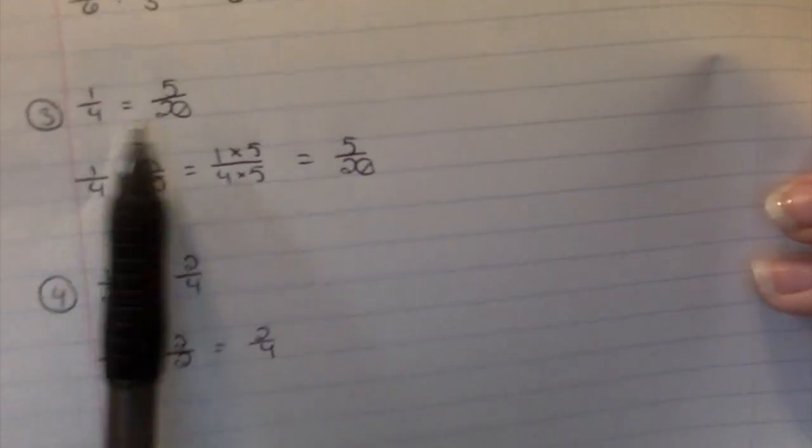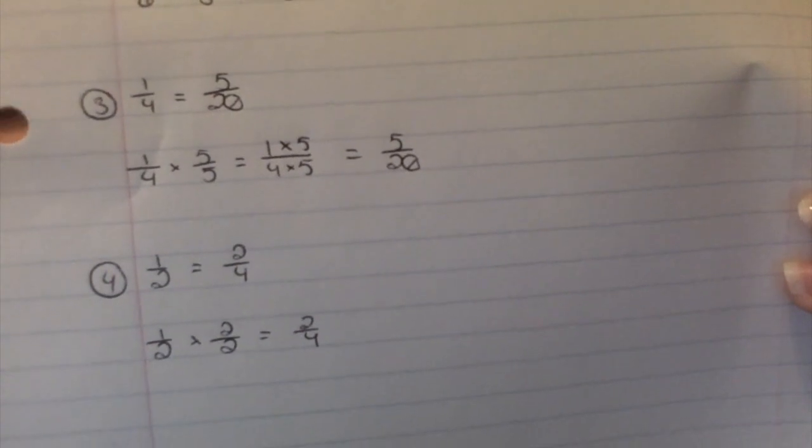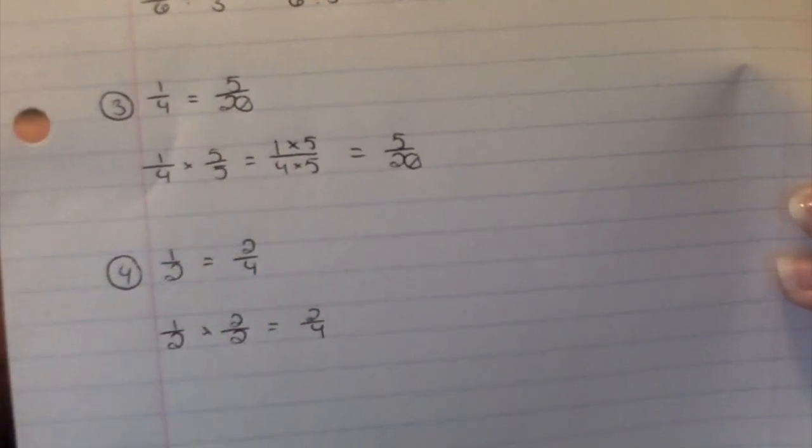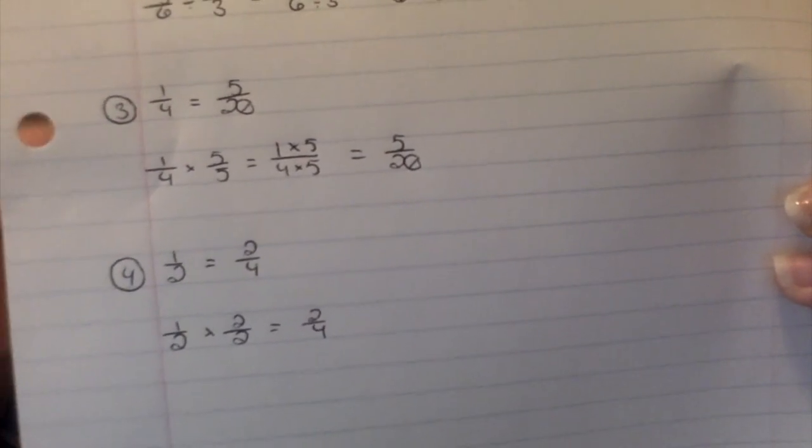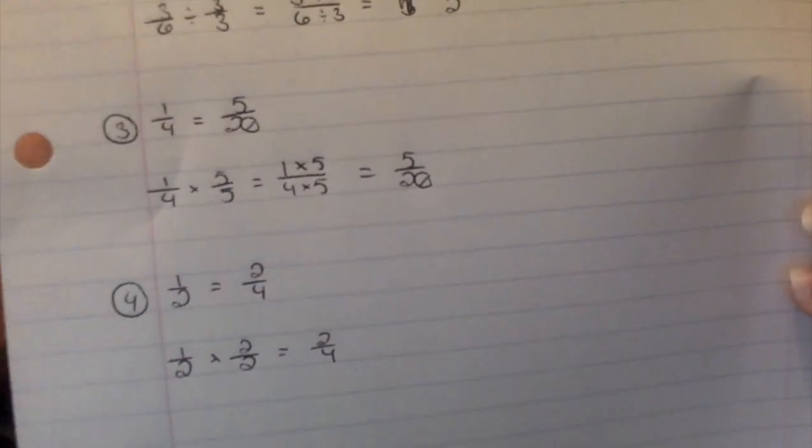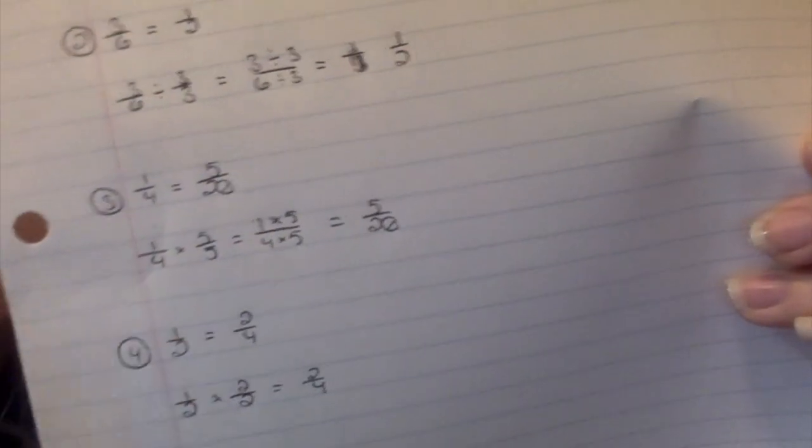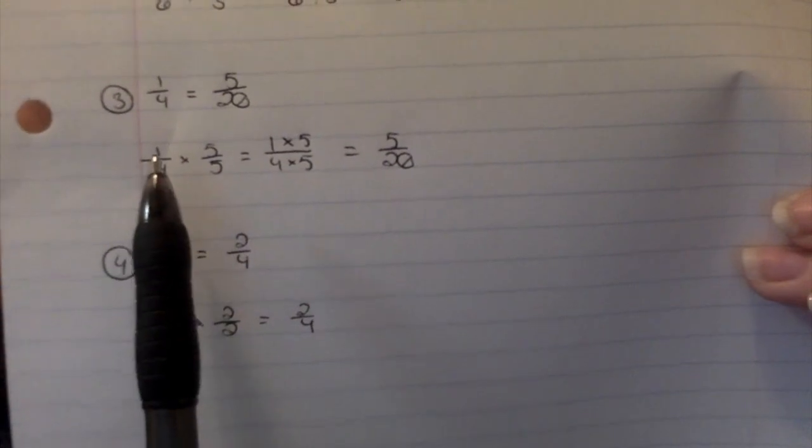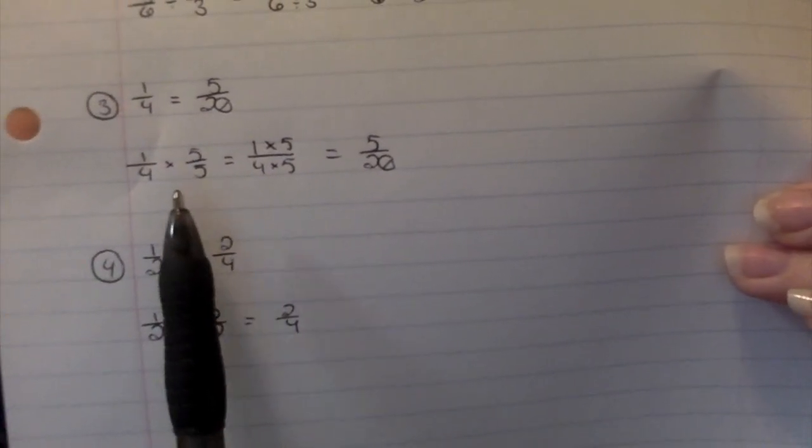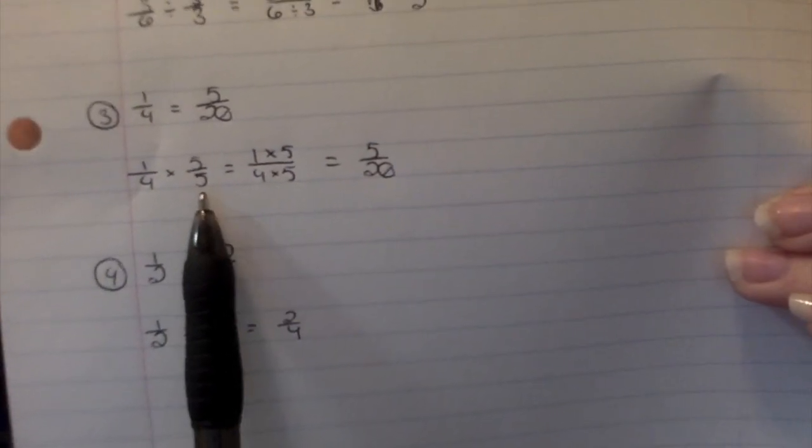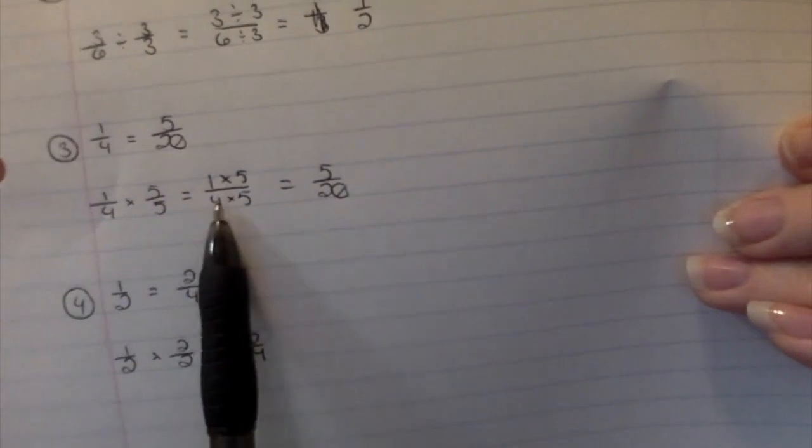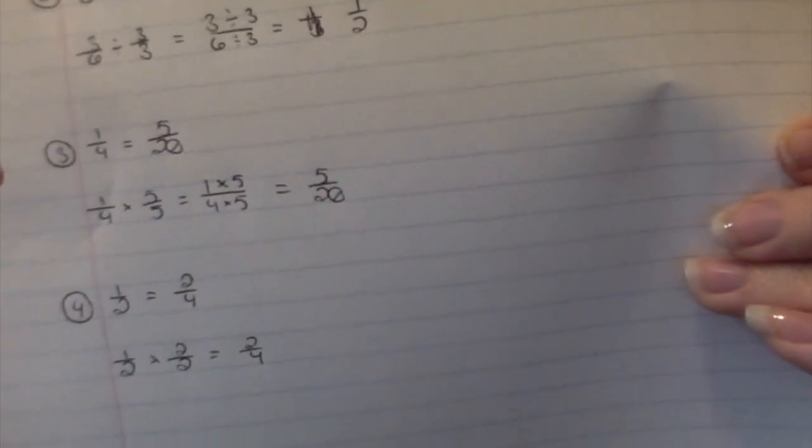Problem number three. One-fourth equals five-twentieths. This is again indeed true, because I can do some sort of math to one-fourth to make it larger into five-twentieths. Well, again, because I know my multiplication facts, I can look at four and twenty and notice that there is a relationship there. And the relationship there is that when I multiply four times five, I get twenty. But because it's an equivalent fraction, what I do to the top, I must do to the bottom. So I have one-fourth, and I want twenty on the denominator. So I multiply it by five. But again, it's an equivalent fraction, and what I do to the bottom, I must do to the top. So I have one times five over four times five, which is five-twentieths. That's an equivalent fraction.